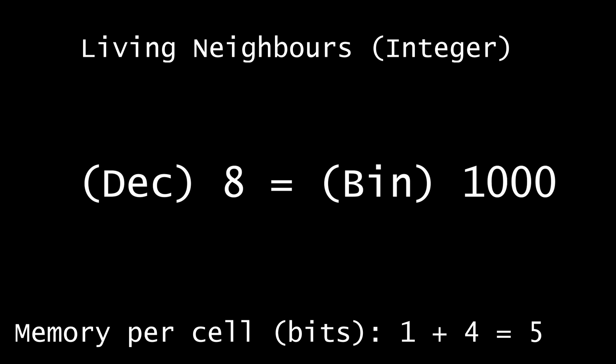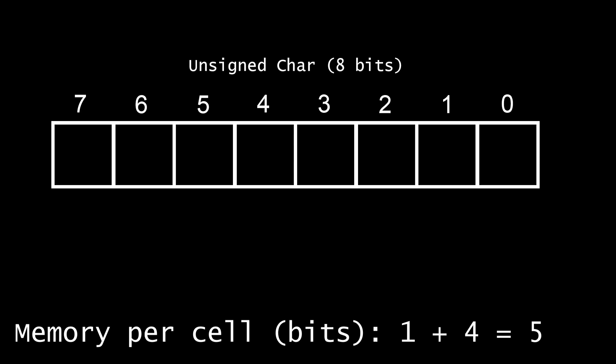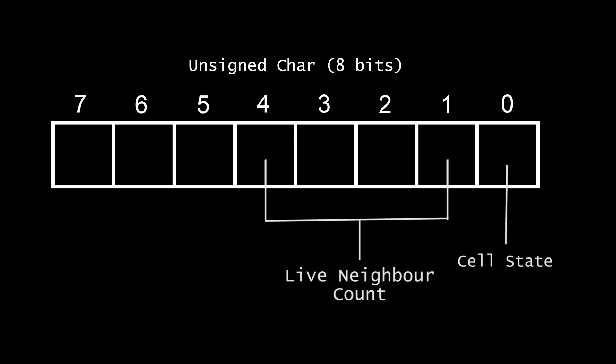But wait — in C++, the smallest types are bool and char, which are both a byte, 8 bits in size. So we need a way of storing both the cell state and the number of living neighbours in one of these types. There's no way we can store both values in a boolean variable, but since the char can store numbers, we could use some bitwise manipulation to store our two variables inside one unsigned char. This way, we're only wasting 3 bits of memory. The 0th bit will store our cell state, and the next 4 bits — from the 1st to the 4th bit inclusive — will hold the number of living neighbours. The 5th to 7th bits will be unused.